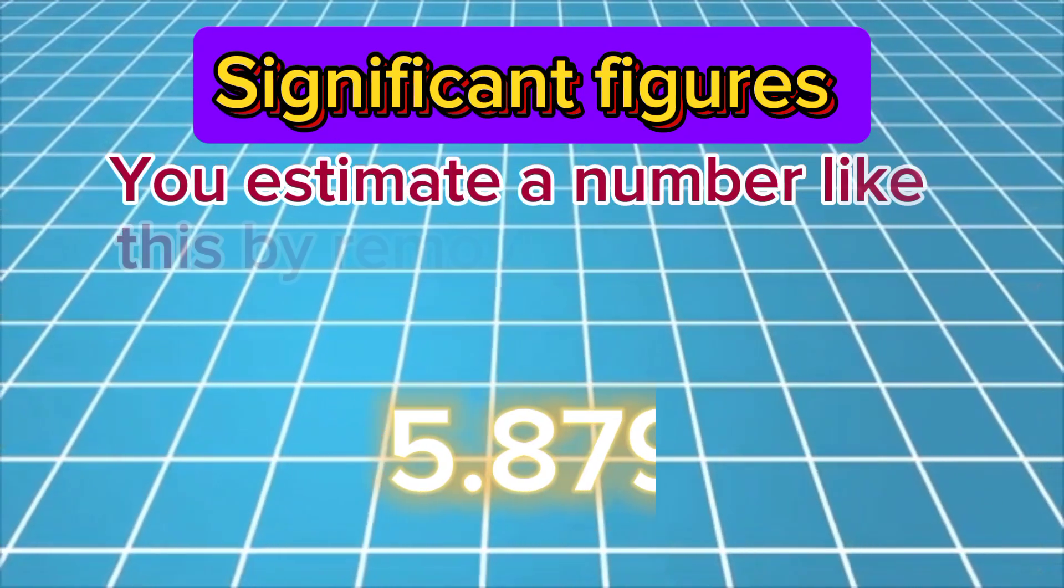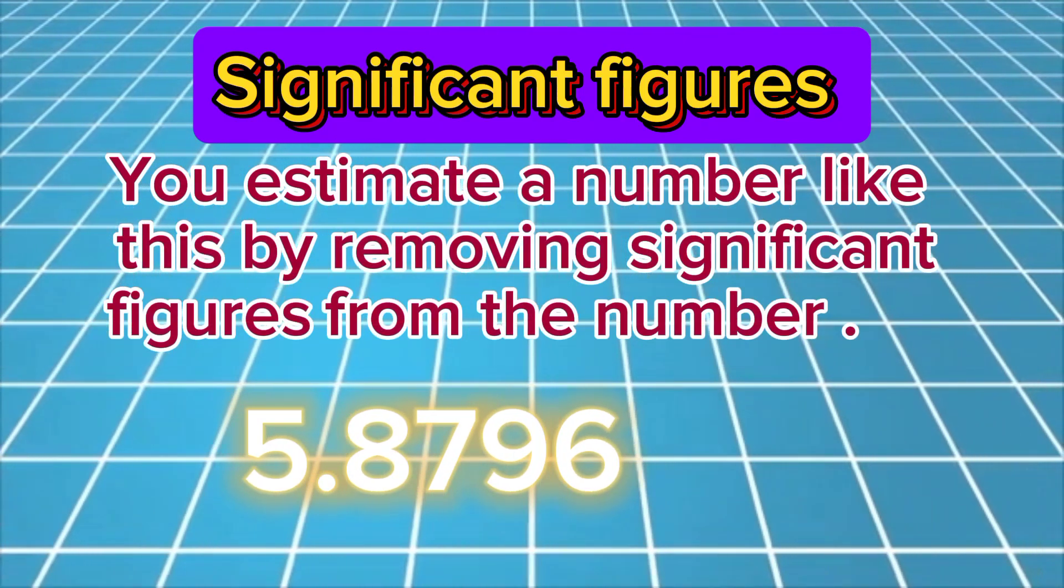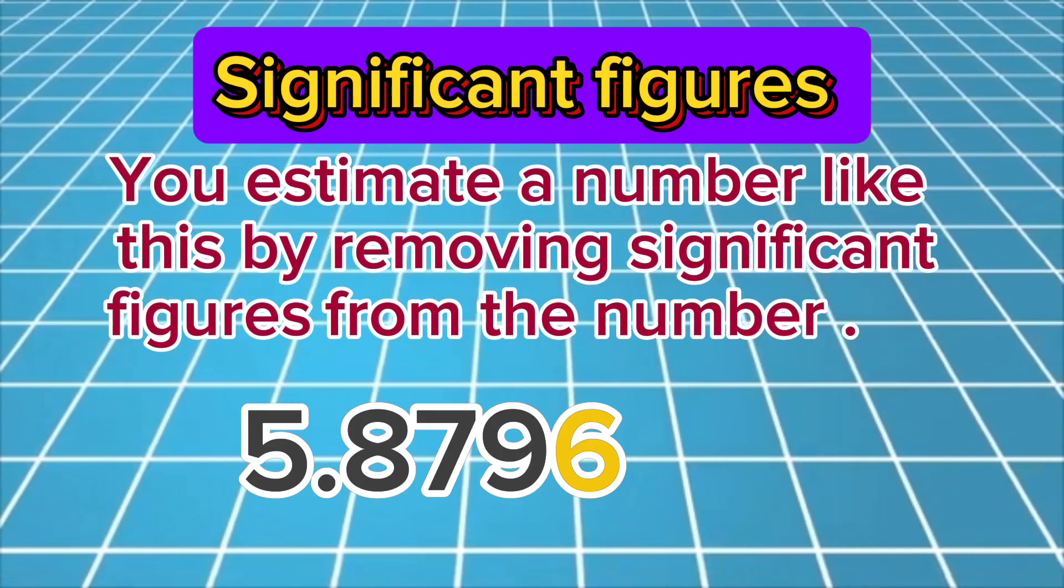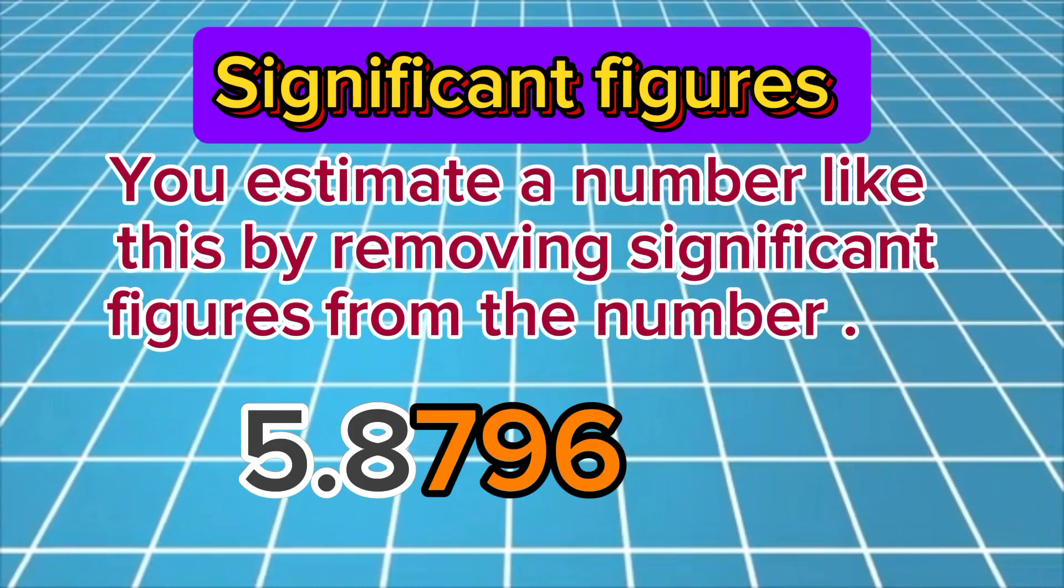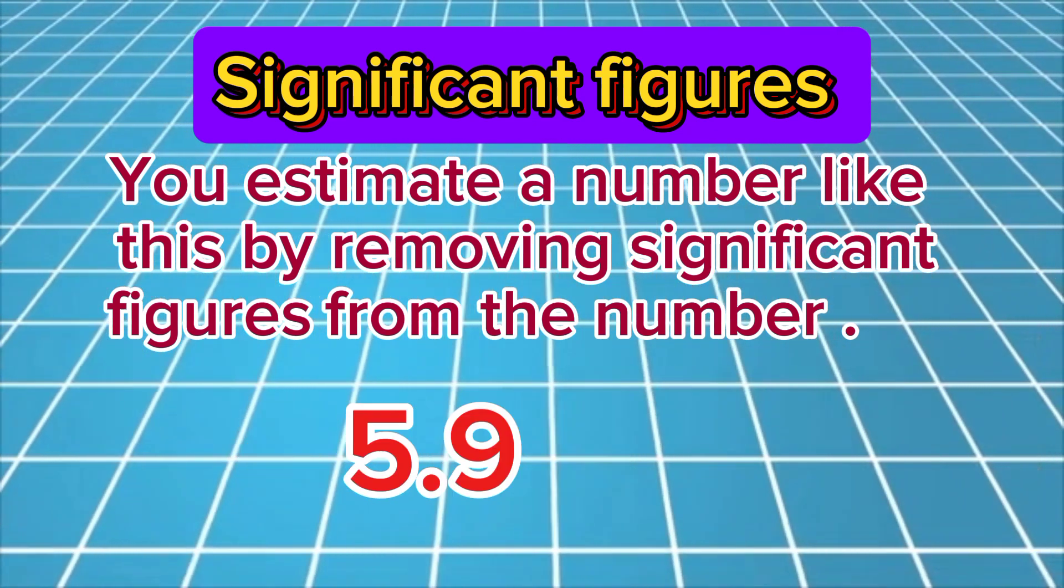You estimate a number like this by removing significant figures from the number, starting from the right, until you have the desired number of significant figures, rounding as you go.